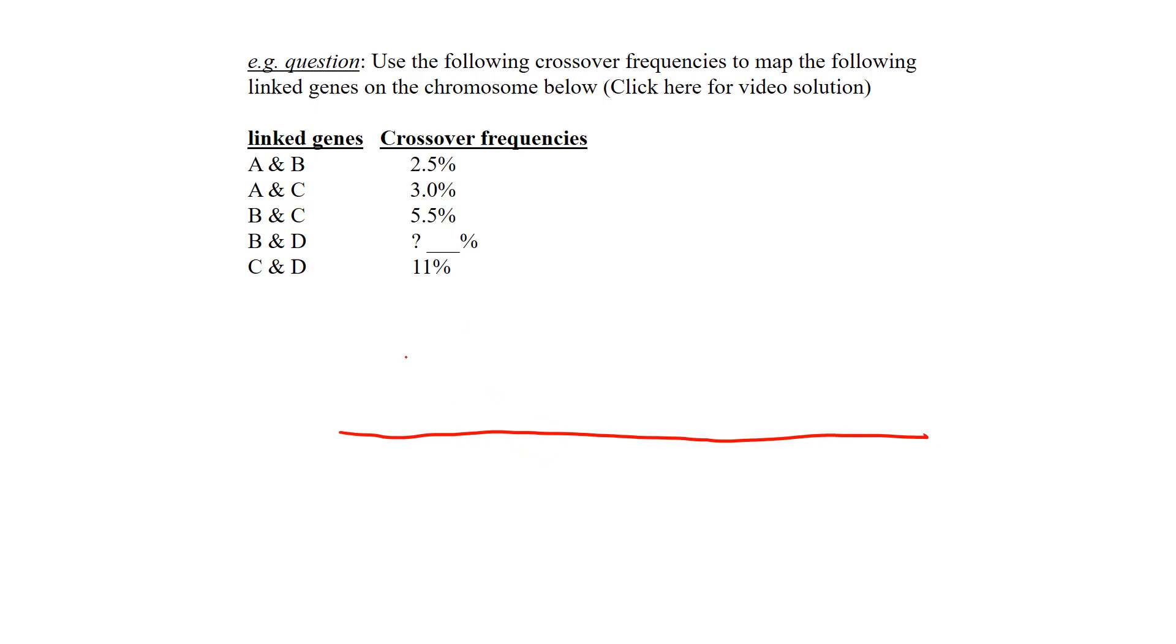Step one: find the highest crossover frequency that exists between two genes. The highest frequency I see is 11 percent, and that's for C and D. I'm going to put these guys at opposite ends of the spectrum on this chromosome and say that this is 11 percent.